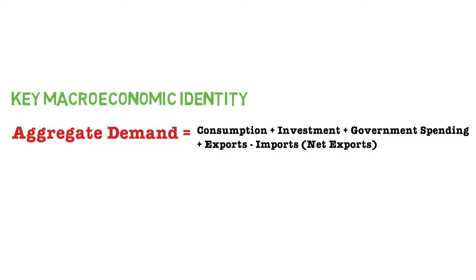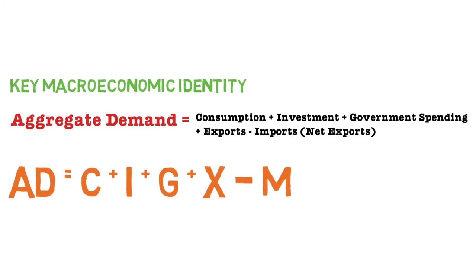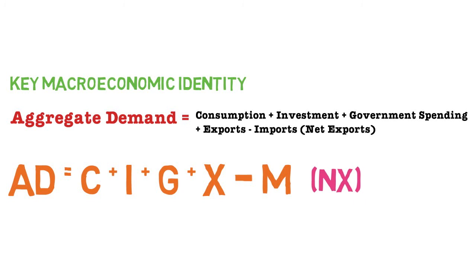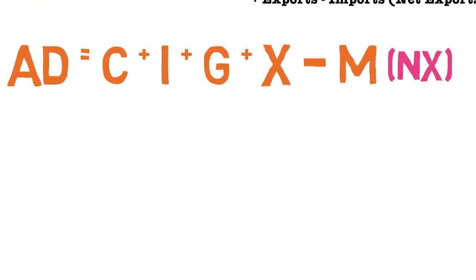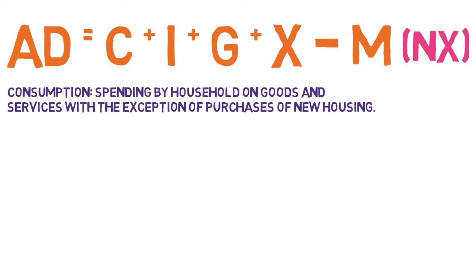Aggregate demand is made up of a number of different components including consumption from households, investment from firms, government spending, exports, and minus imports to give us this net exports idea. In shorthand, we can say AD equals C plus I plus G plus X minus M, where X minus M gives us the concept of net exports — exports after imports are taken away.